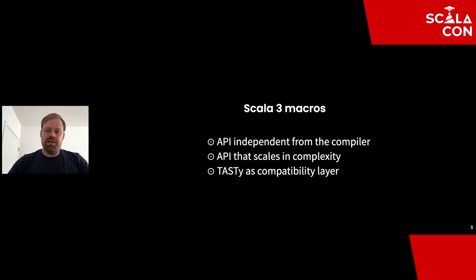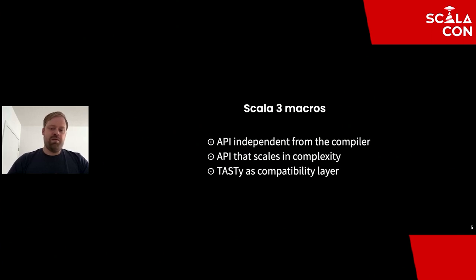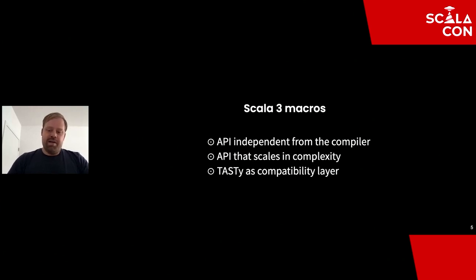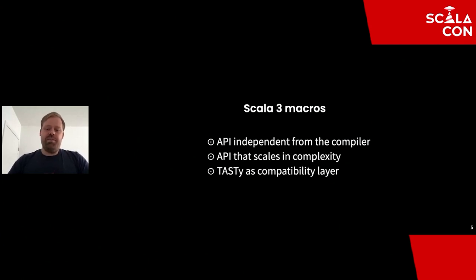When we started Scala 3 macros, our design goals were to make the macro API completely independent from the compiler and to avoid interoperability issues. We also wanted the complexity of writing a macro to scale with the complexity of the code being written — simple code generators should be easy to write, while complex ones should still be possible. Finally, we use the Tasty file format as a compatibility layer between macros and the compiler, ensuring portability to future versions of Scala.